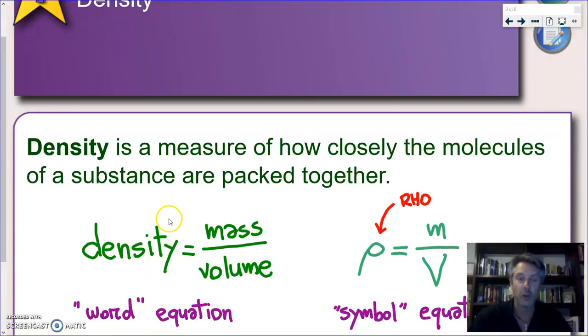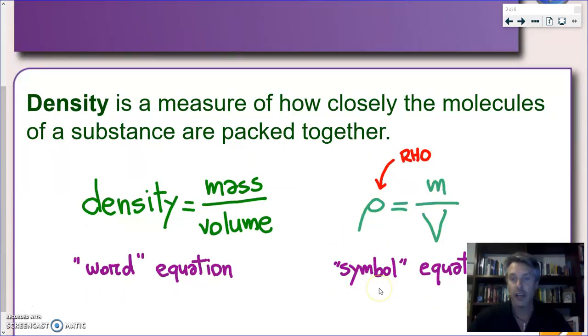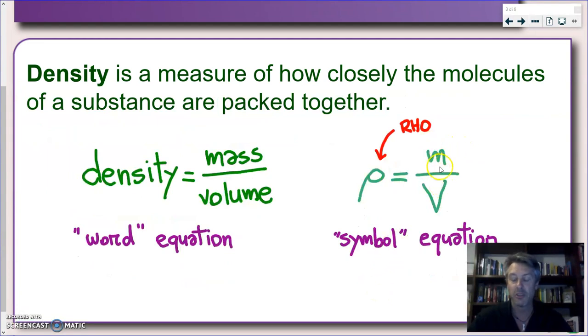You have a relationship between quantities and they are defined by words. So the word mass, the word volume, the word density. But in real science, most of the time we prefer to represent these quantities with symbols because it's easier, it's faster. So instead of using this so-called word equation, we're going to use a symbol equation. And probably you can recognize some of the symbols. Small m stands for mass, big V stands for volume. And this strange letter, this is not a P, this is a Greek letter, rho. And in many textbooks, including yours, is used to define density. So we don't use small d, we're going to use this Greek letter. So this is the equation we're going to use from now on.